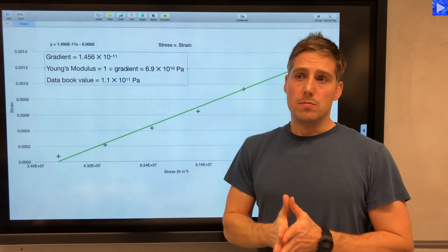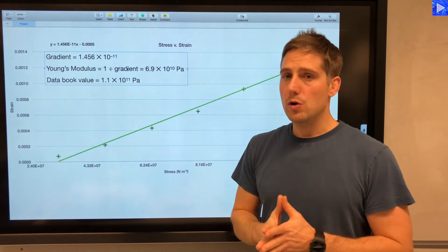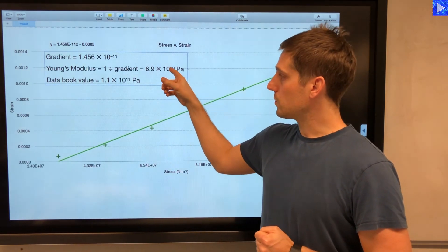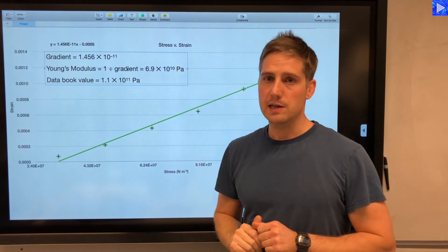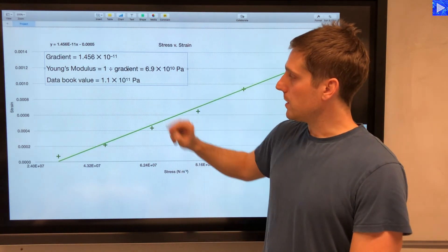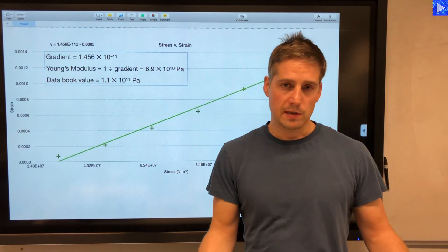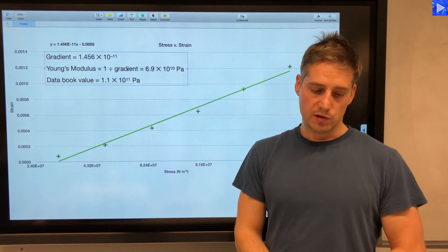The experimental value minus the data book value divided by the data book value. So since there's a percentage difference, we're only really interested in the positive value of the difference. So you would just take the modulus of the top line of the experimental minus the data book value and divide it by the data book value multiplied by 100.